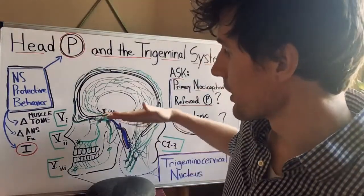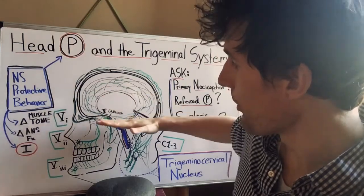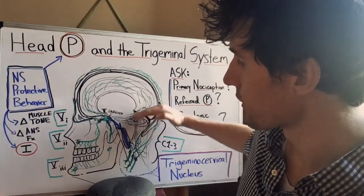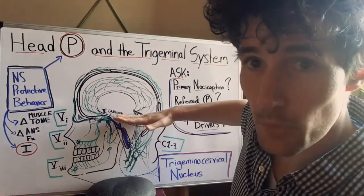Now there's a bit of a caveat there it's innervating the meninges above the tentorium which is this horizontal meningeal membrane here.